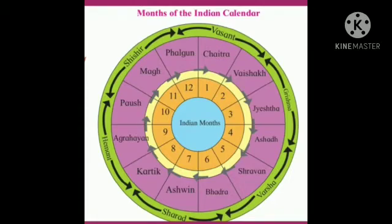Now, children, let's look at the Indian calendar. The Indian calendar also has twelve months, and the year begins with the month of Chaitra and ends with Falgun.